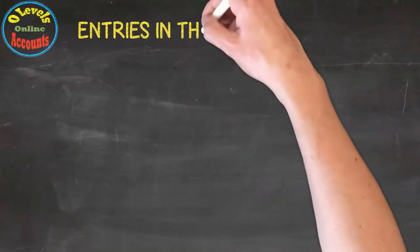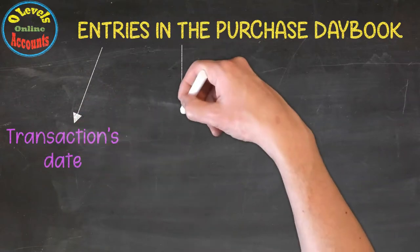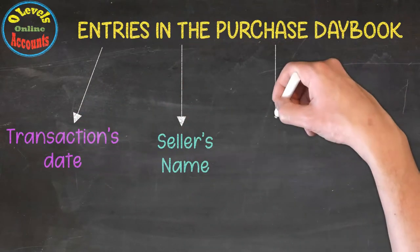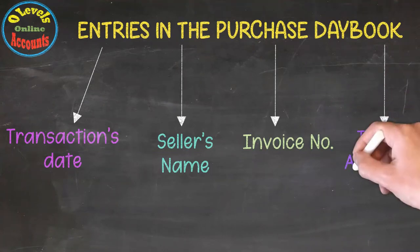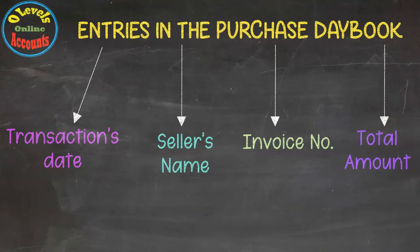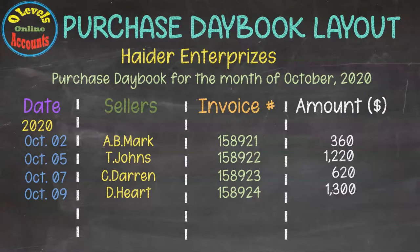There are four entries in the Purchase Daybook. Firstly, Transaction Date. Secondly, Seller's Name. The third one, Invoice Number. And finally, Total Amount Charged by them. Here we have a Purchase Daybook layout. In this layout, we place the heading of the business and the related information for the transaction — that is the Date, Seller Name, Invoice Numbers, and related amounts in the respective columns.